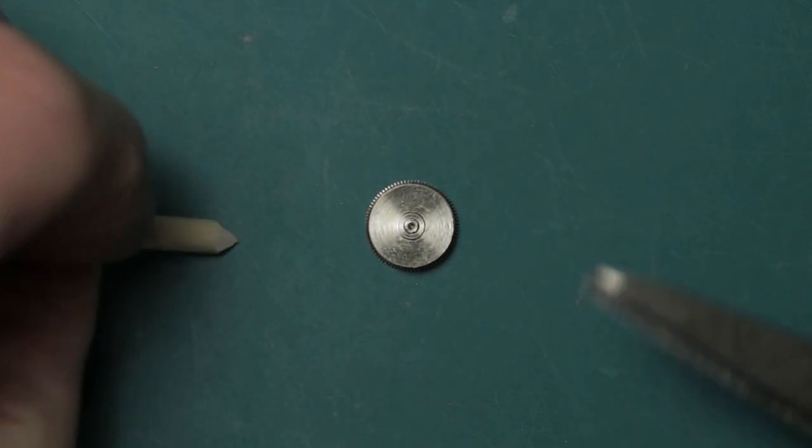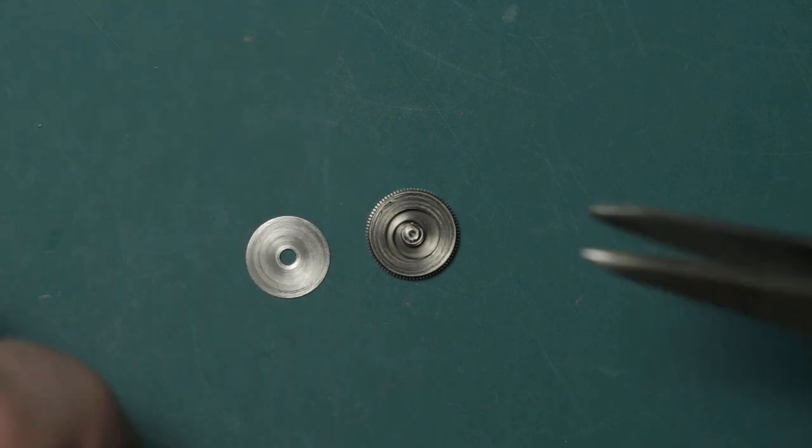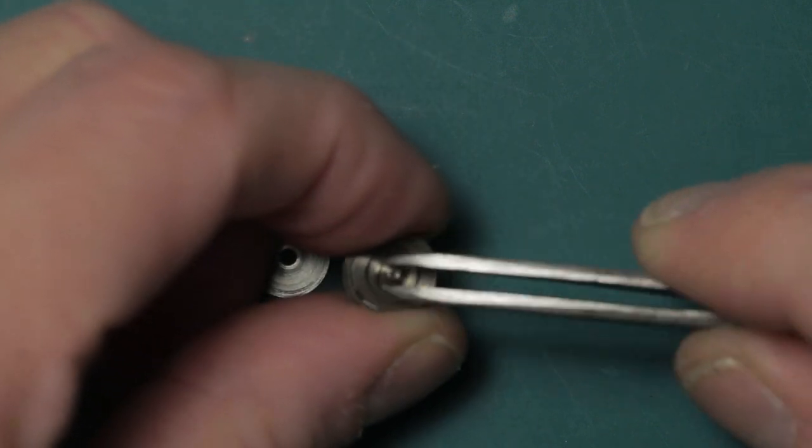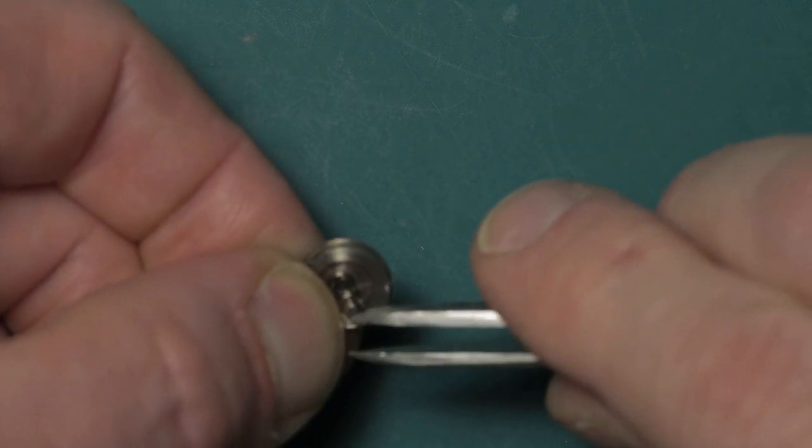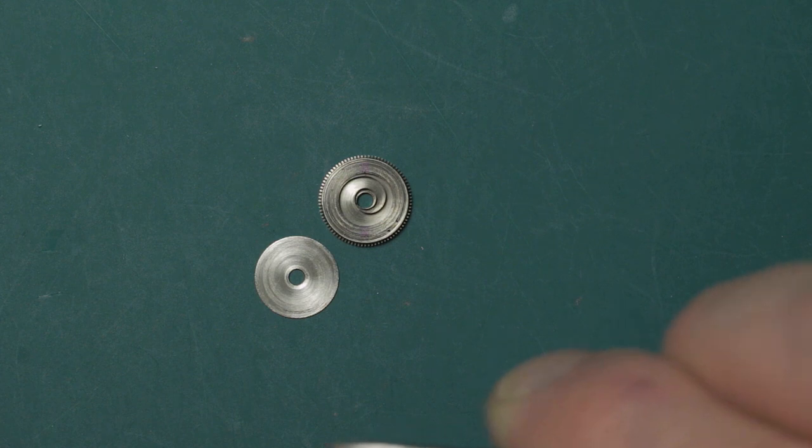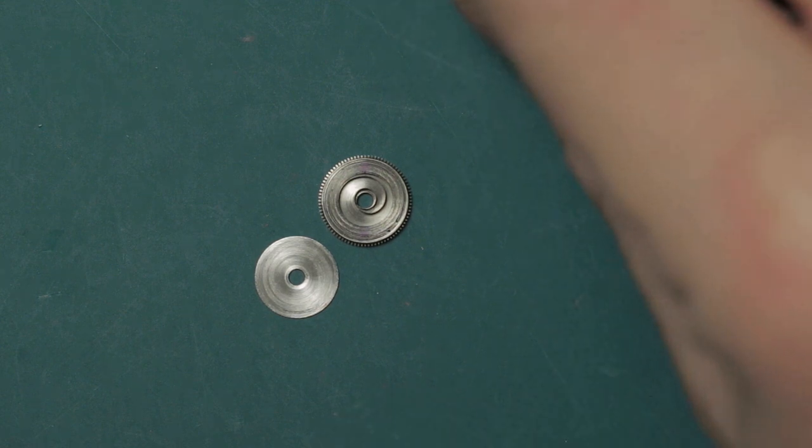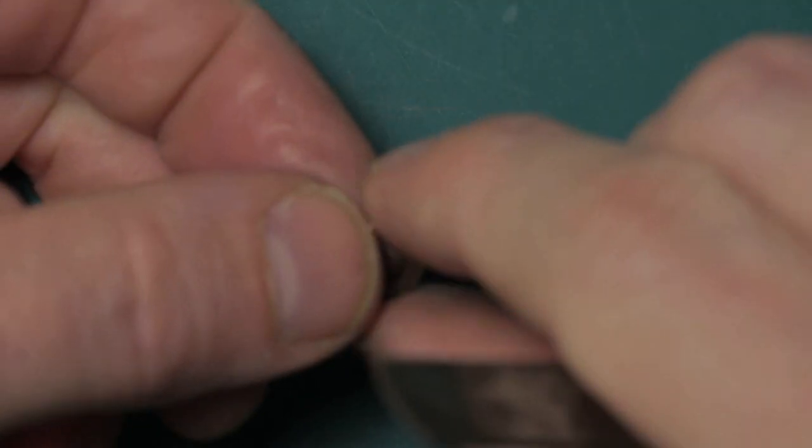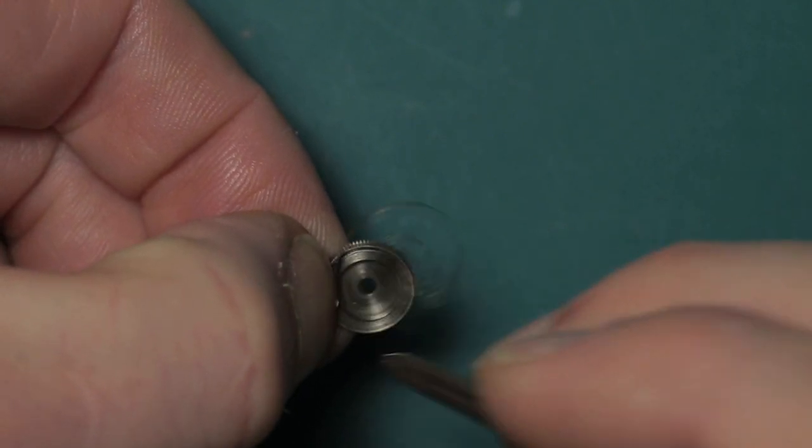So here we're just removing the mainspring from the barrel so the whole thing can be cleaned, and I will be refitting the same mainspring in this case. Using the same sturdy tweezers that I used to remove the oscillating weight, these tweezers are reserved almost exclusively for mainspring barrel arbor fitting and removal. We pop the barrel arbor out, and at this point we can walk the mainspring out of its barrel. This is, of course, a slipping mainspring because this is an automatic movement.